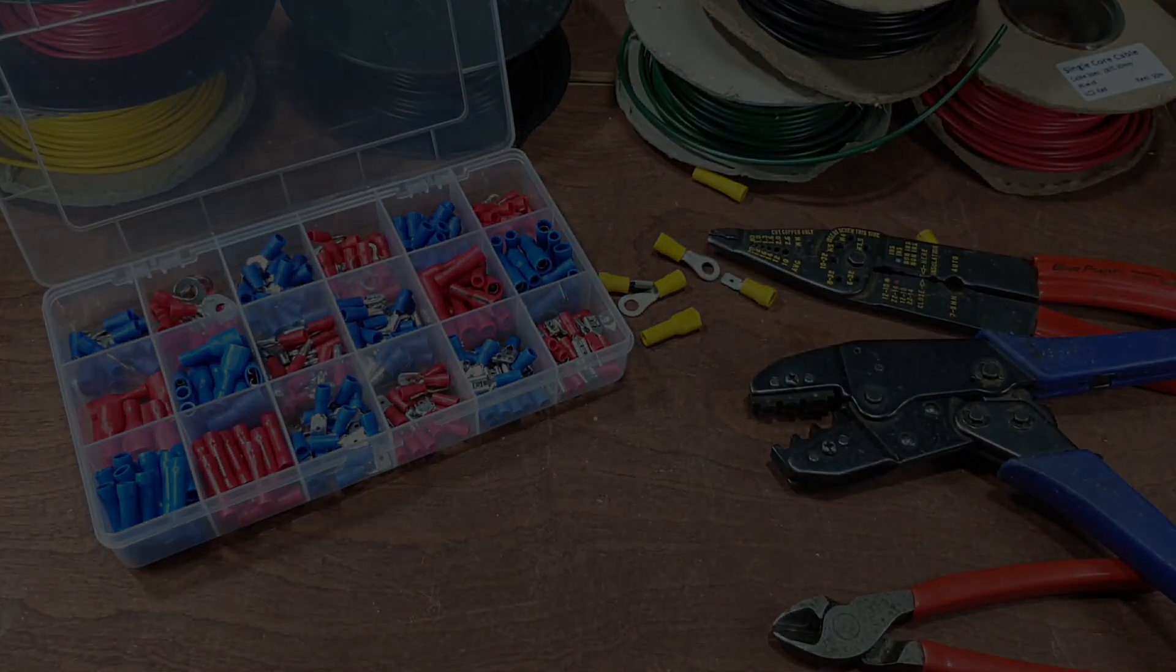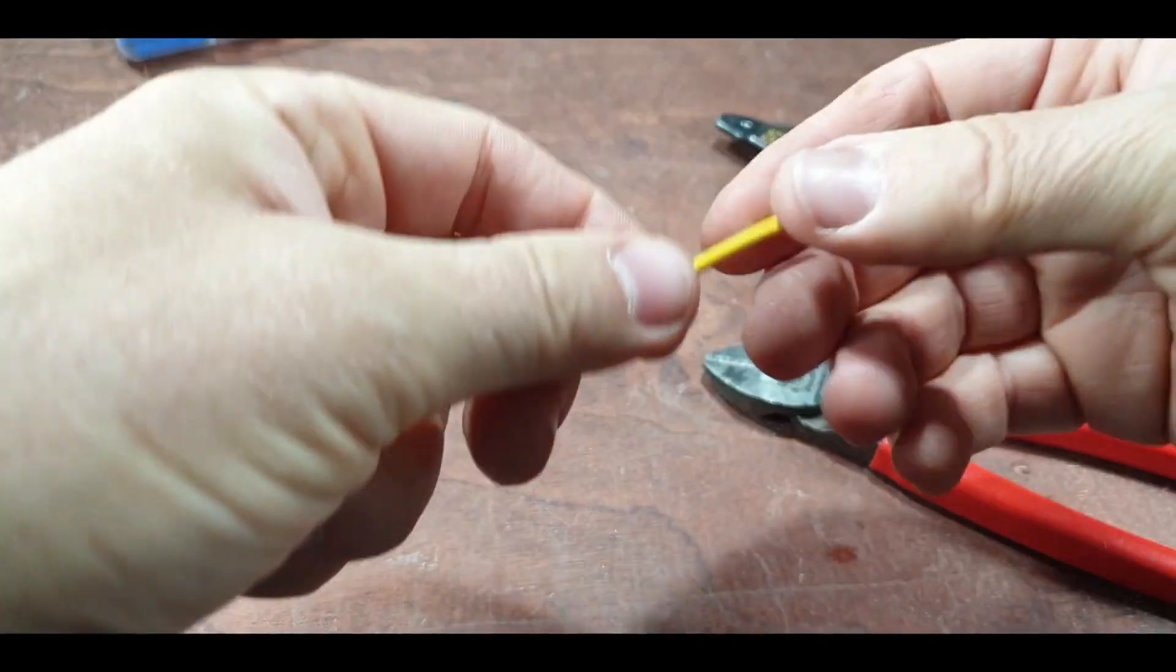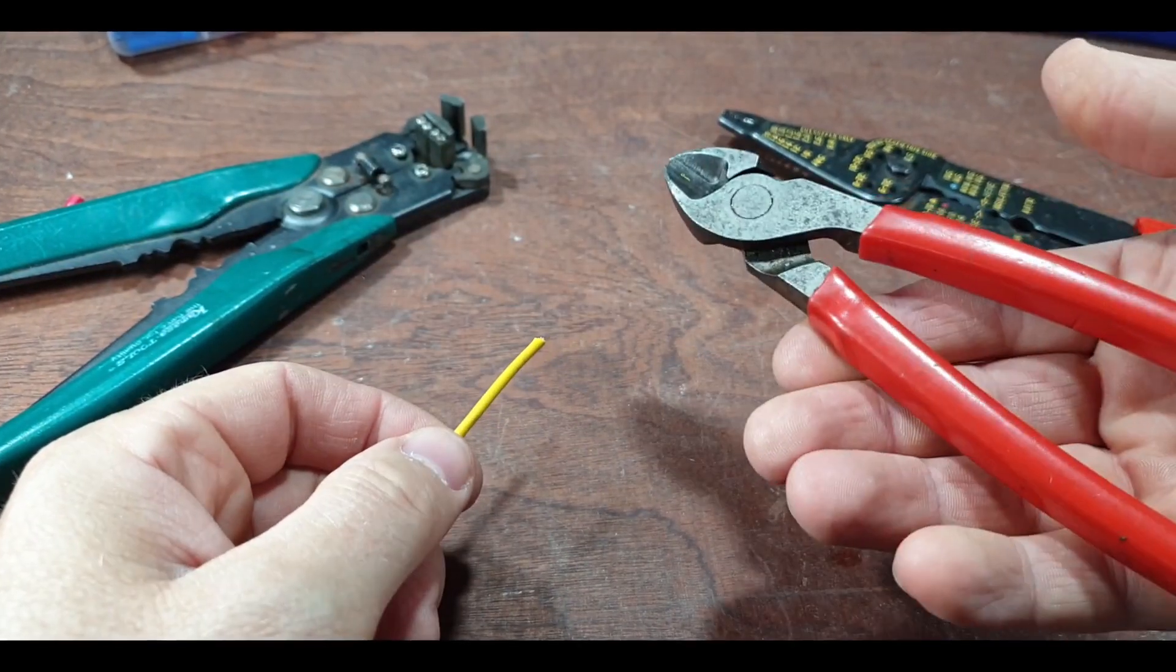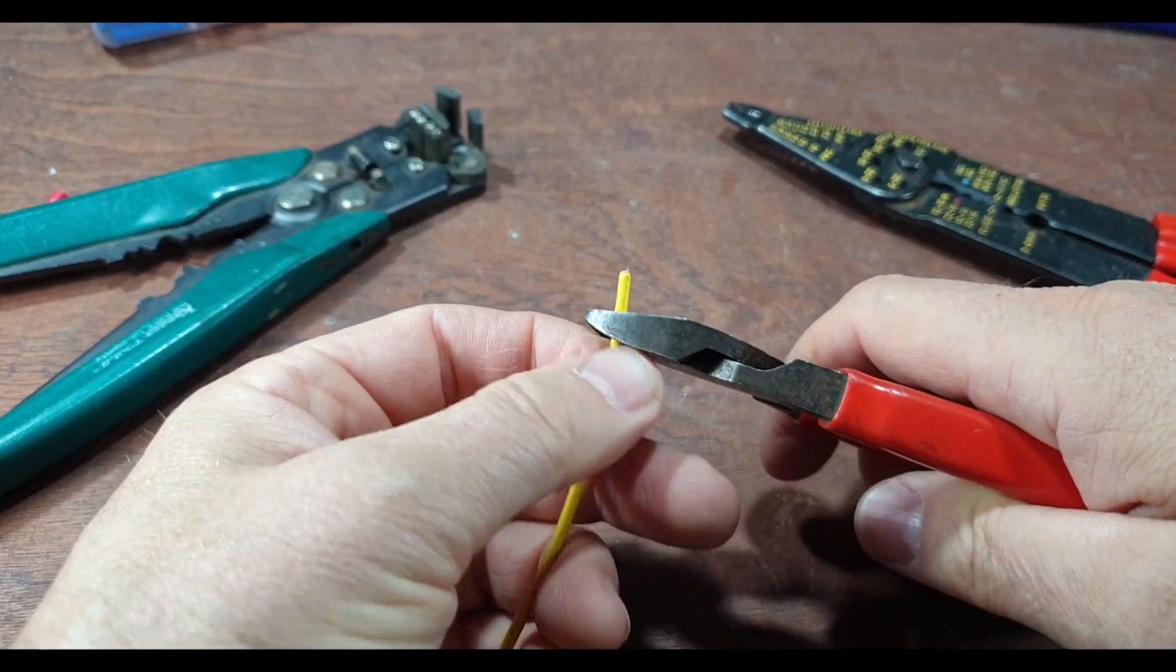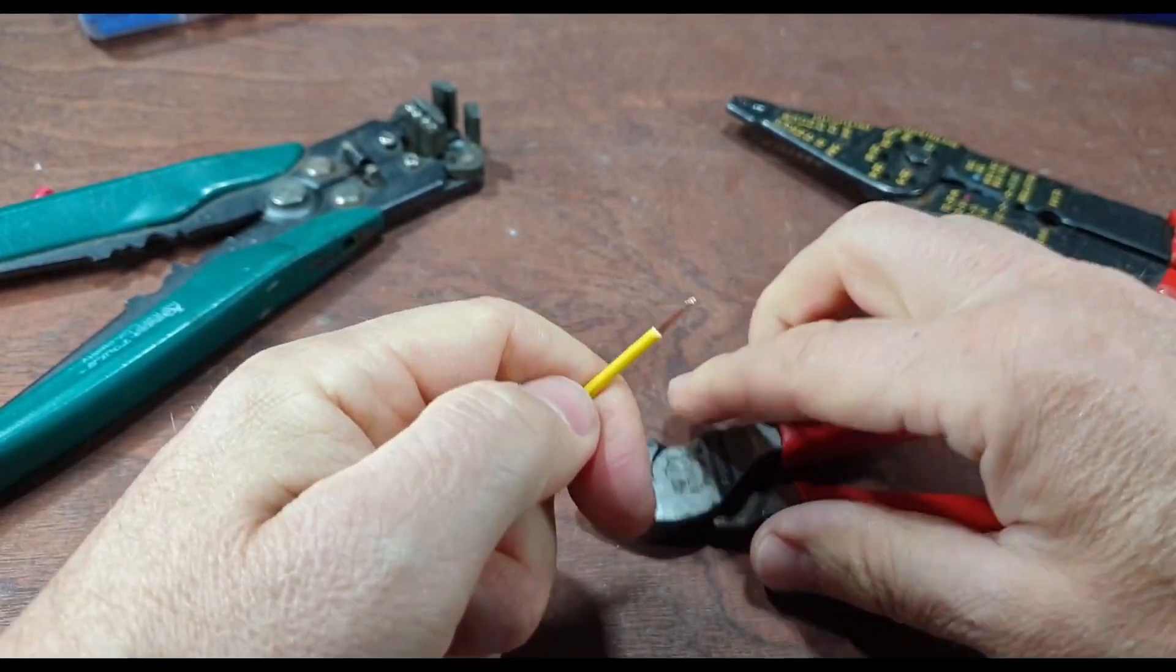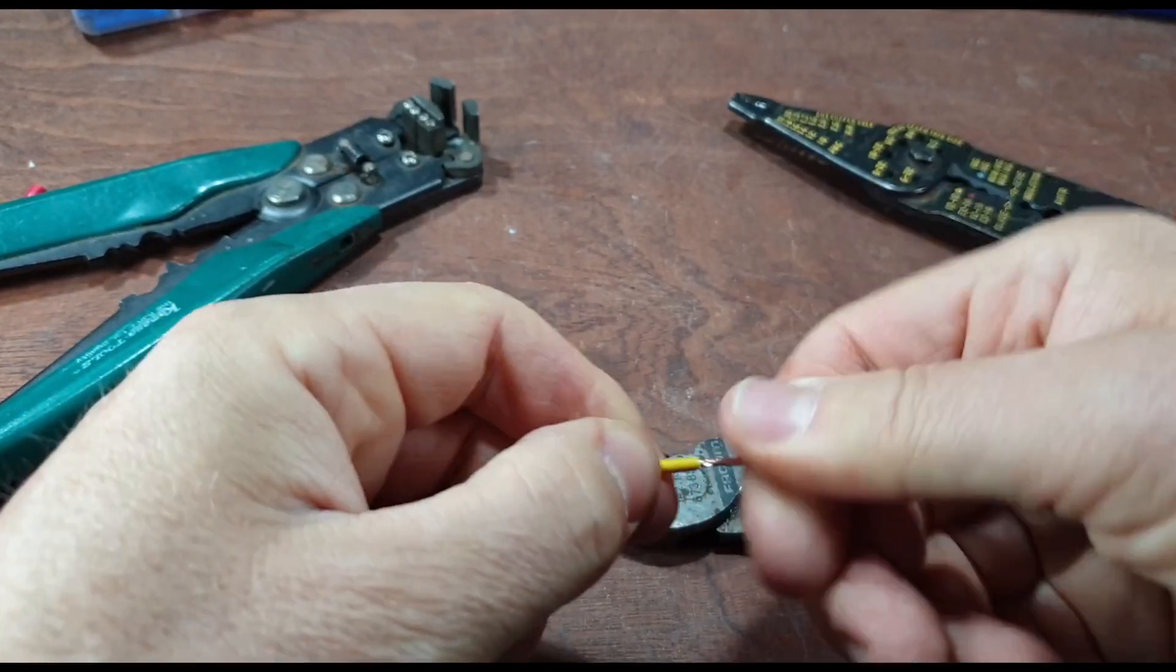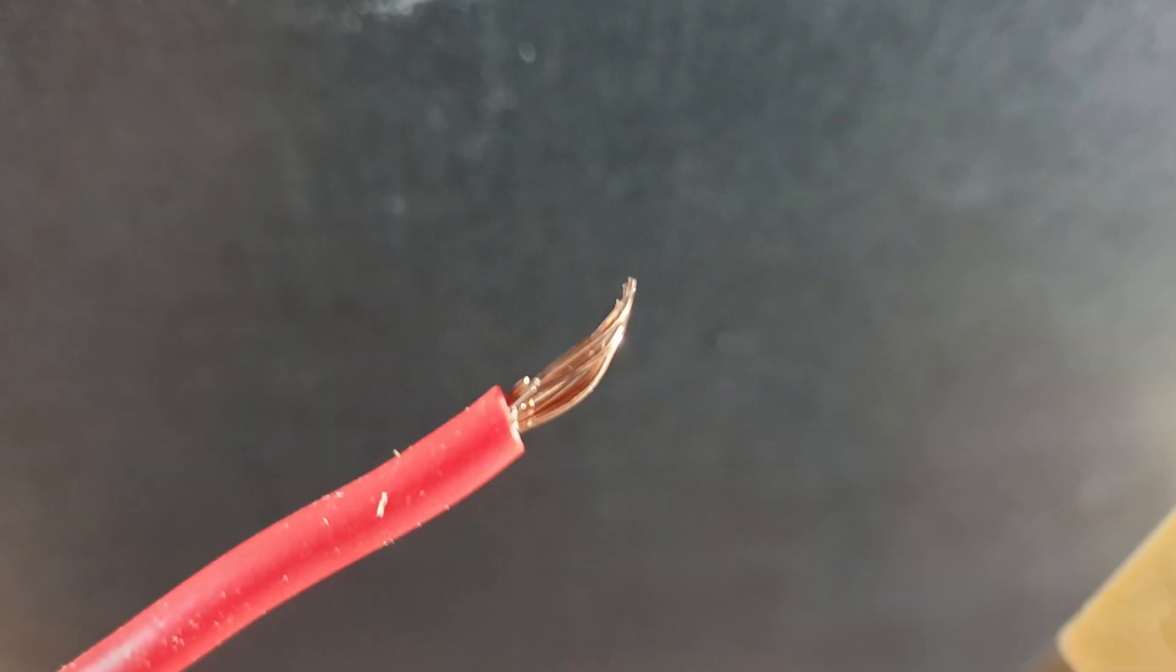So first up, you've got to strip the cable. I'm going to show you three ways of doing this. This is where Sparks—you'll see a lot of electricians do this on household cables, but they're not multi-core, so you've got to be a little bit careful with this. The likelihood is you're going to cut off more than you need.